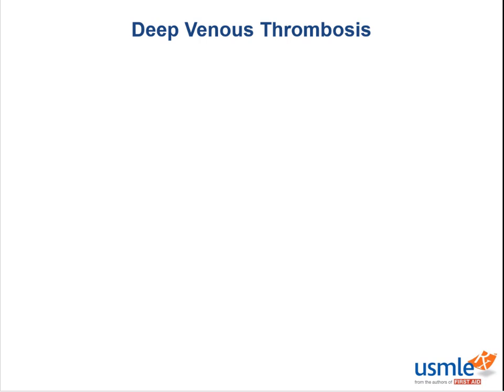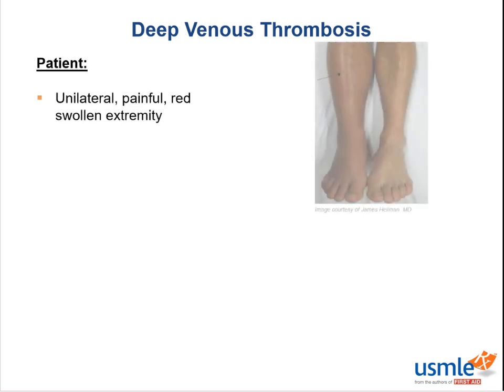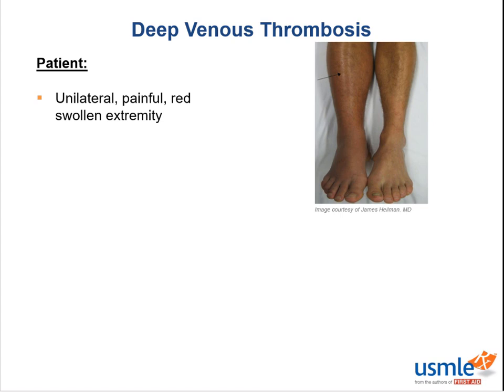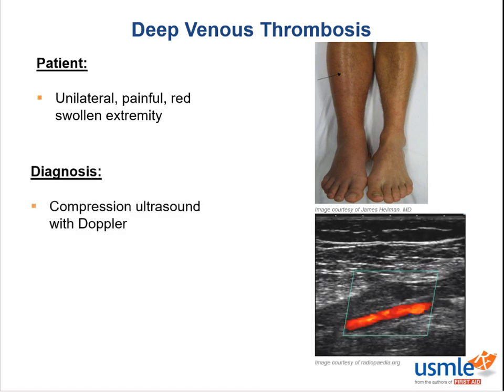So how does DVT present? Patients come with a unilateral, painful, red swelling of the affected leg. Important differentials to keep on your mind include cellulitis, which can also present similarly, and a popliteal Baker cyst. Do you remember what a Baker cyst was associated with? So arthritis of the knee, especially osteoarthritis and rheumatoid arthritis.